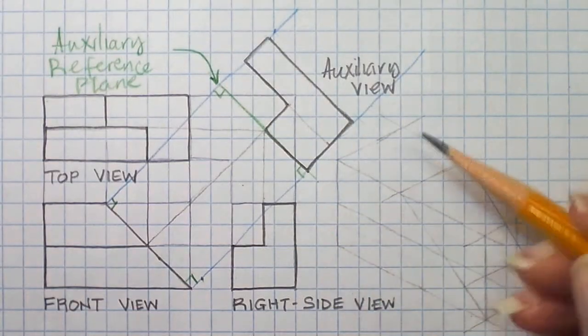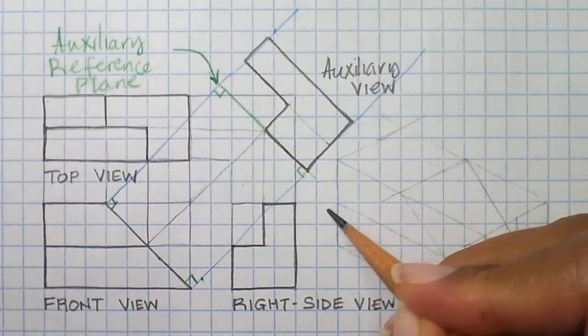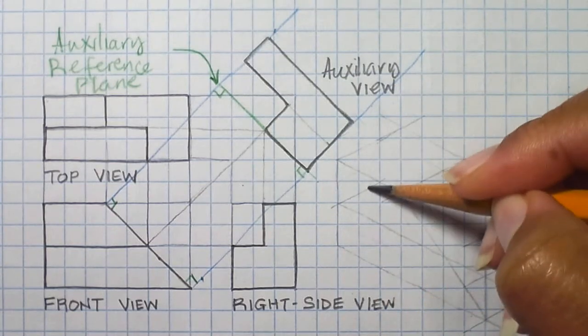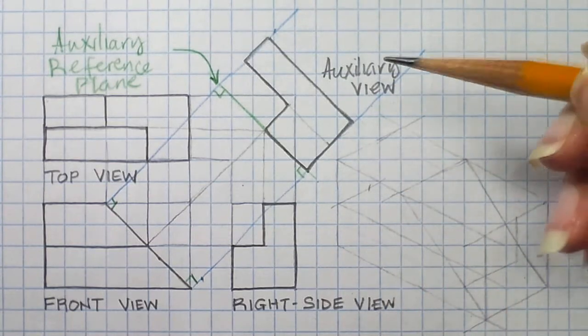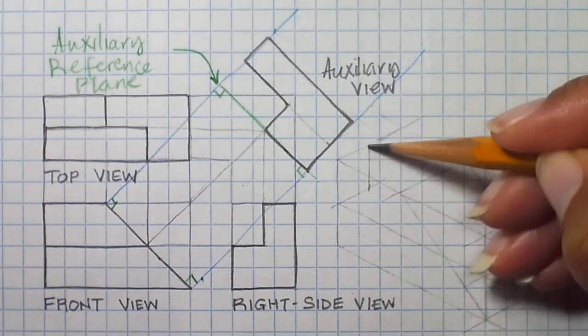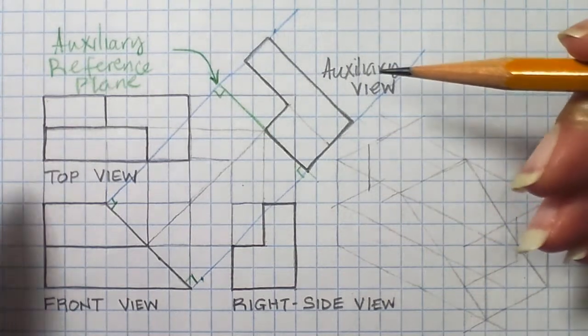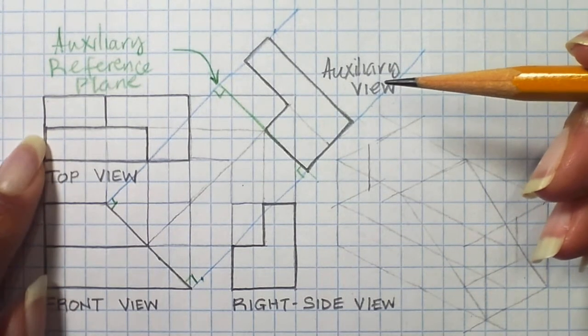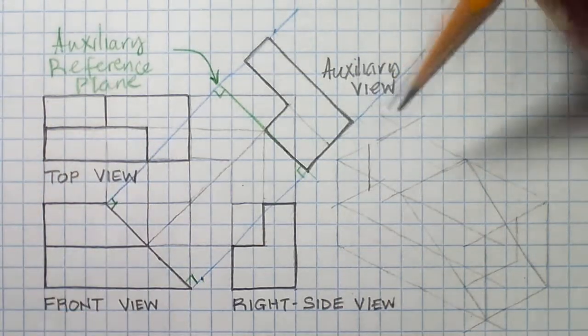So first things first, we know that there is a one and a half unit cut into it. So somewhere about there. So it goes up two units and I can go up two units.